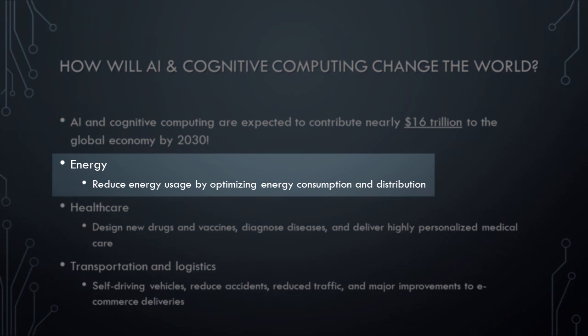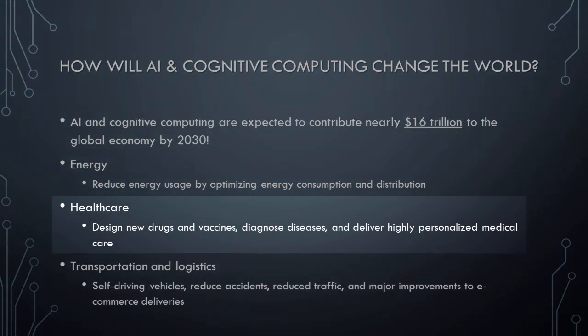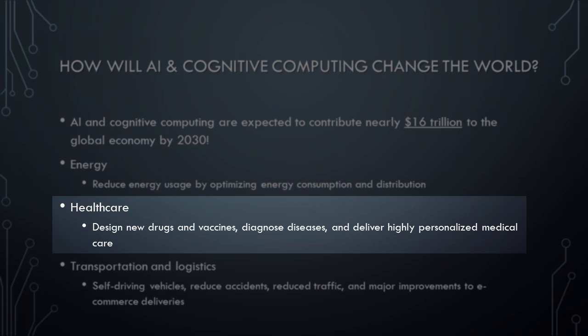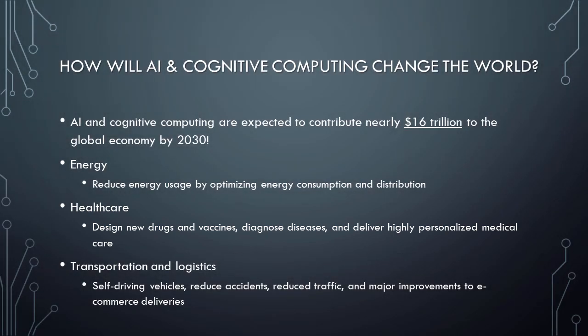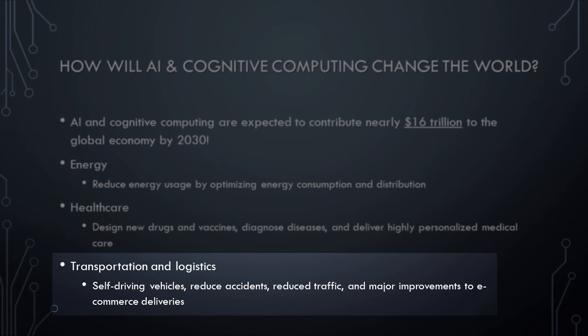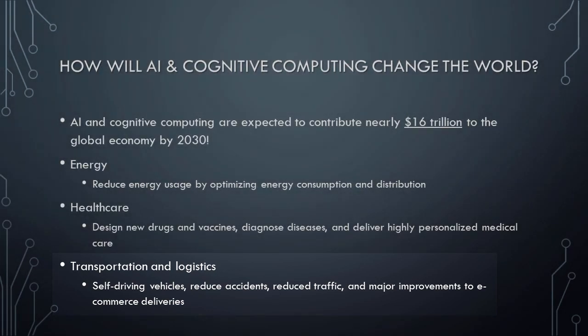In the energy sector, AI and cognitive computing will be used to reduce global energy usage by optimizing energy consumption and distribution. In the healthcare sector, AI and cognitive computing will be used to design new drugs and vaccines, diagnose diseases, and deliver highly personalized medical care. In the transportation and logistics sector, AI and cognitive computing will be used to power self-driving vehicles, greatly reduce accidents and traffic congestion, and enable major improvements to e-commerce deliveries.